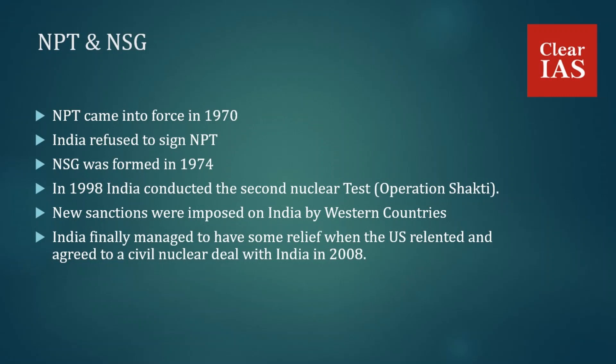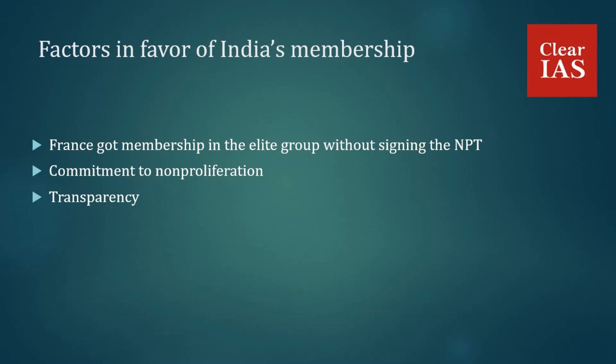The waiver made India eligible to receive advanced nuclear technologies that could be used to enrich uranium and reprocess plutonium. However, being outside the NSG group has kept India out of the latest technologies, as NSG members possess the most efficient and advanced technology — which remains a drawback for India. In 2016, India applied for NSG membership; Pakistan and Namibia also followed suit.